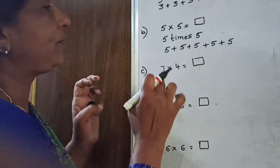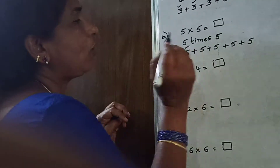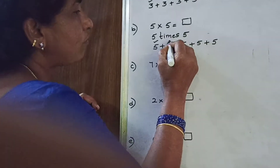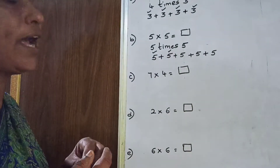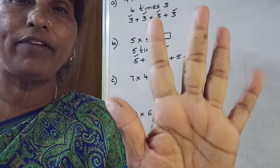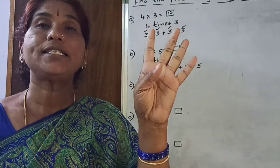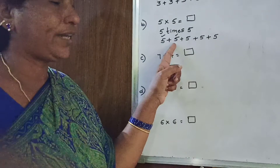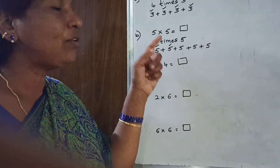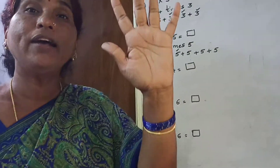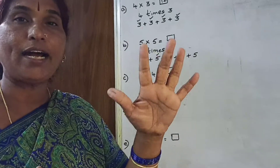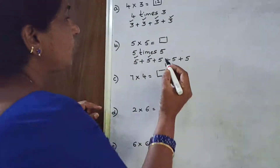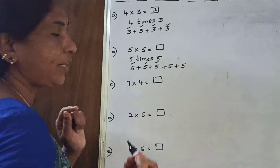Now you have to add. First one is 5, already completed. Now 5 plus 5: 5 in mind, 5 in hand, 5 after: 6, 7, 8, 9, 10. So second one is 10. After that, 10 in mind, 5 in hand, 10 after: 11, 12, 13, 14, 15. This number is also completed.